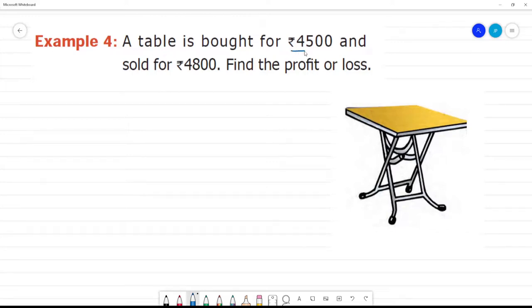A table is bought for Rs. 4,500. Bought for - that is another term, cost price. Cost price of the table.